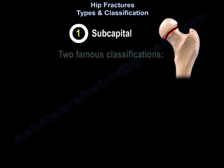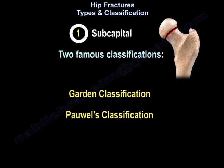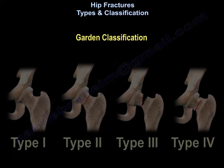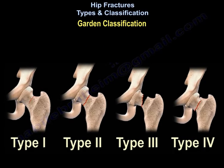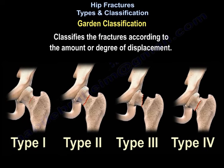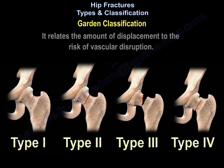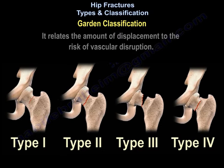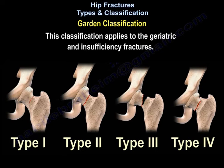The subcapital fracture has two famous classifications: the Garden classification and the Pauwels classification. The Garden classification classifies the fractures according to the amount or degree of displacement. It really relates the amount of displacement to the risk of vascular disruption. This classification applies to geriatric and insufficiency fractures.